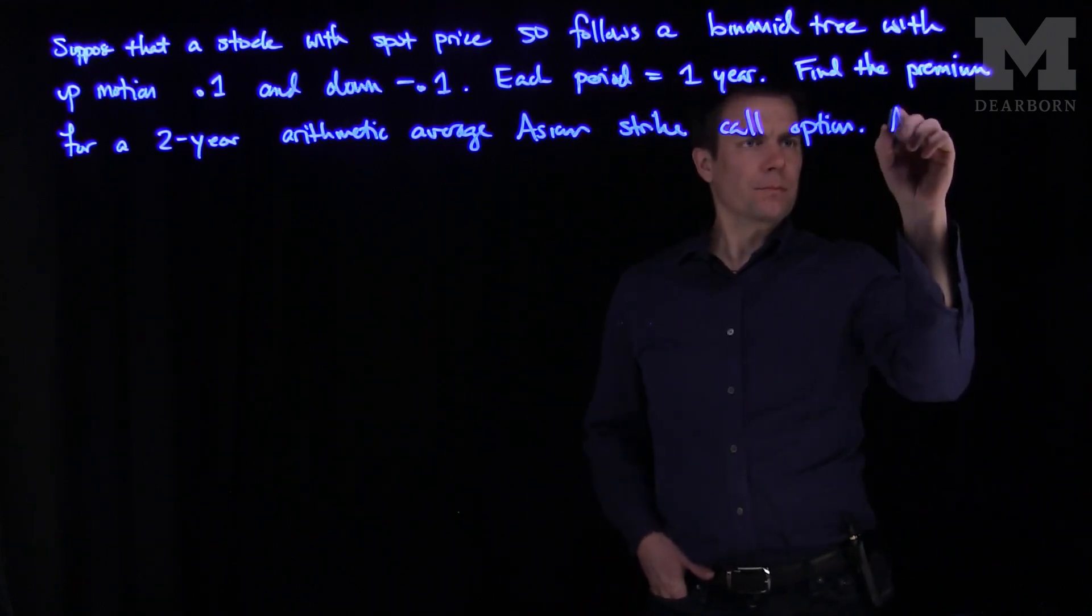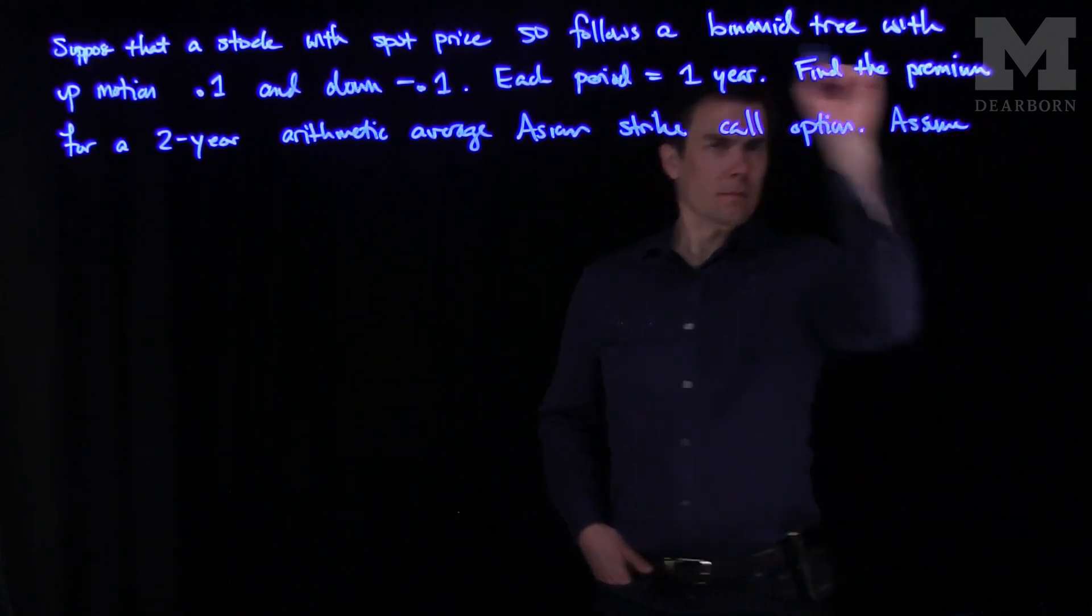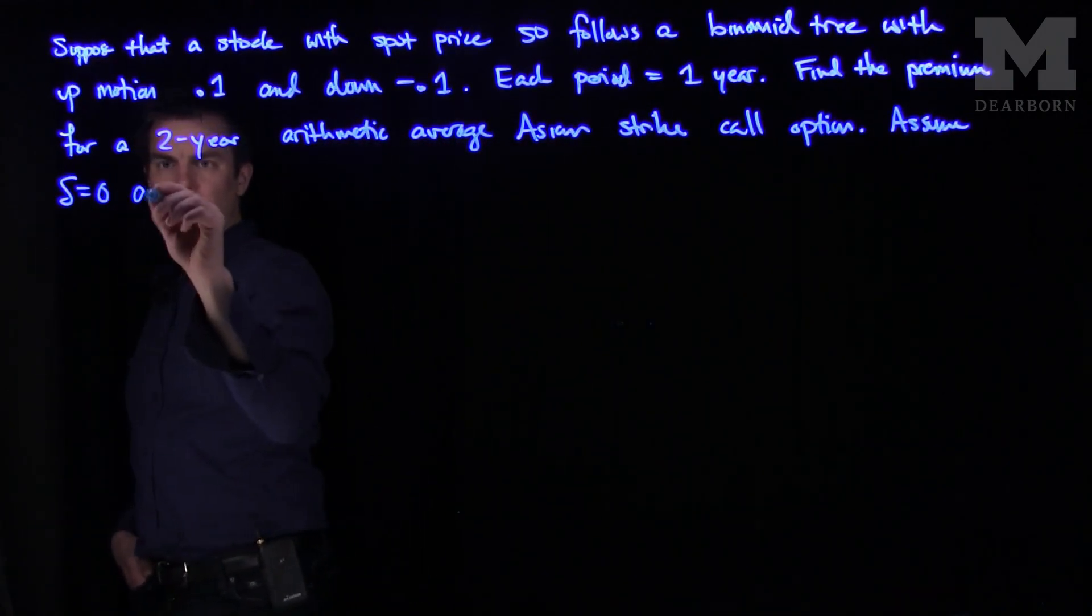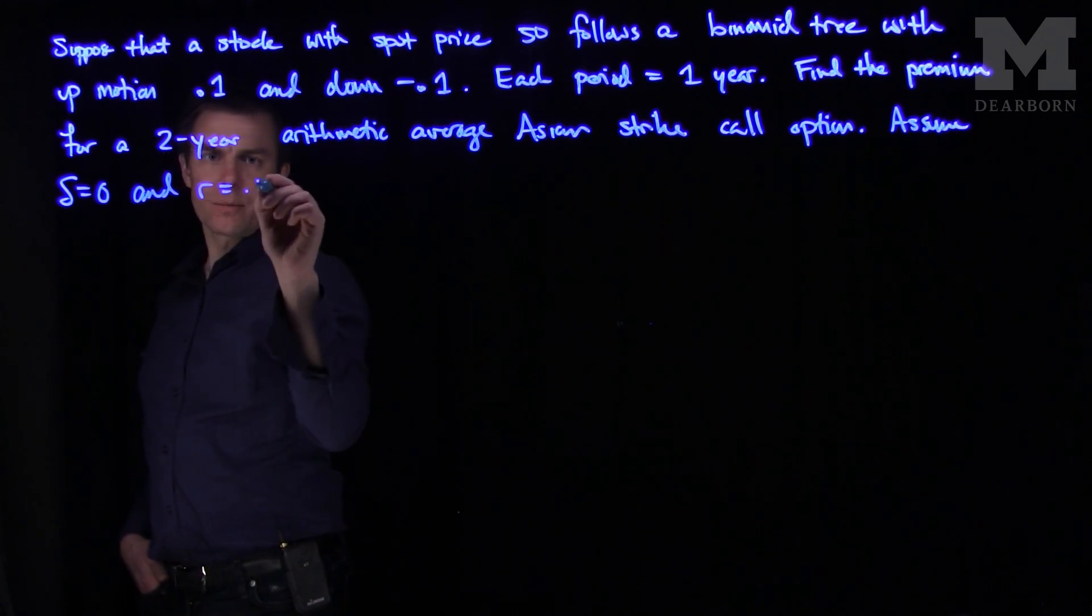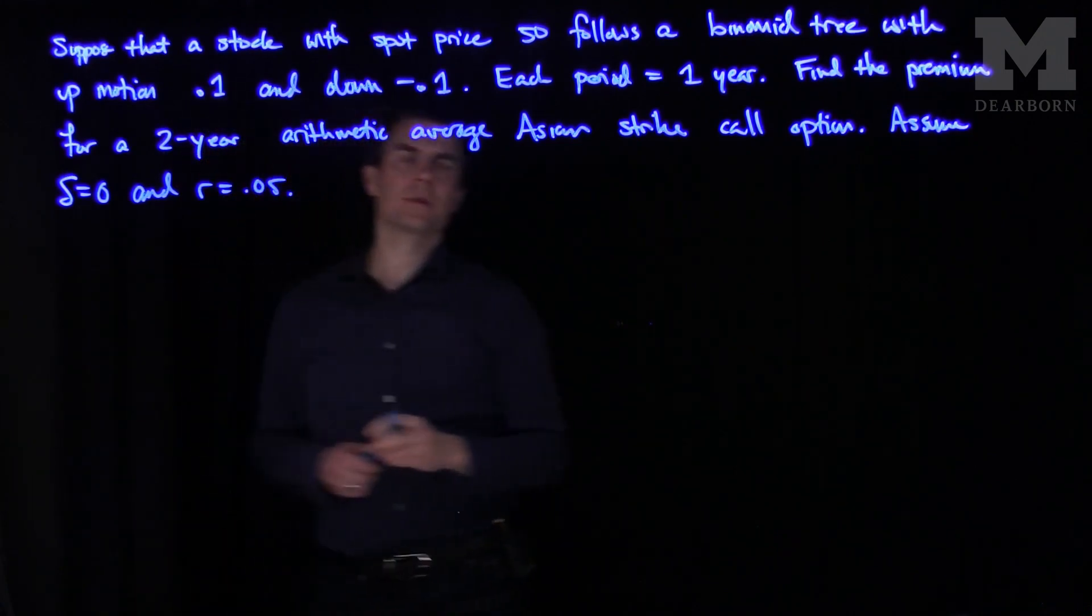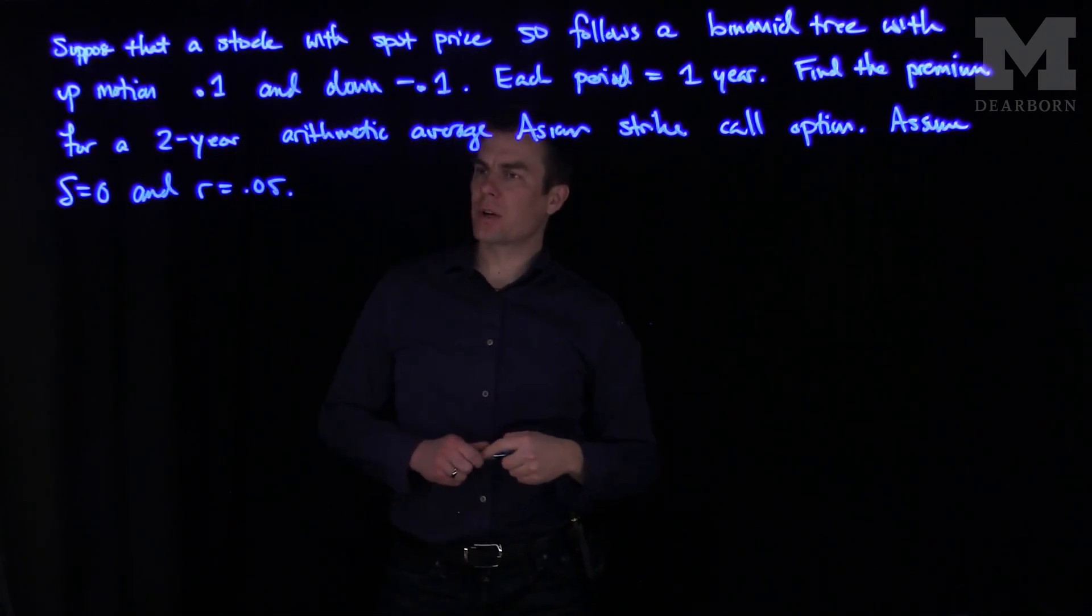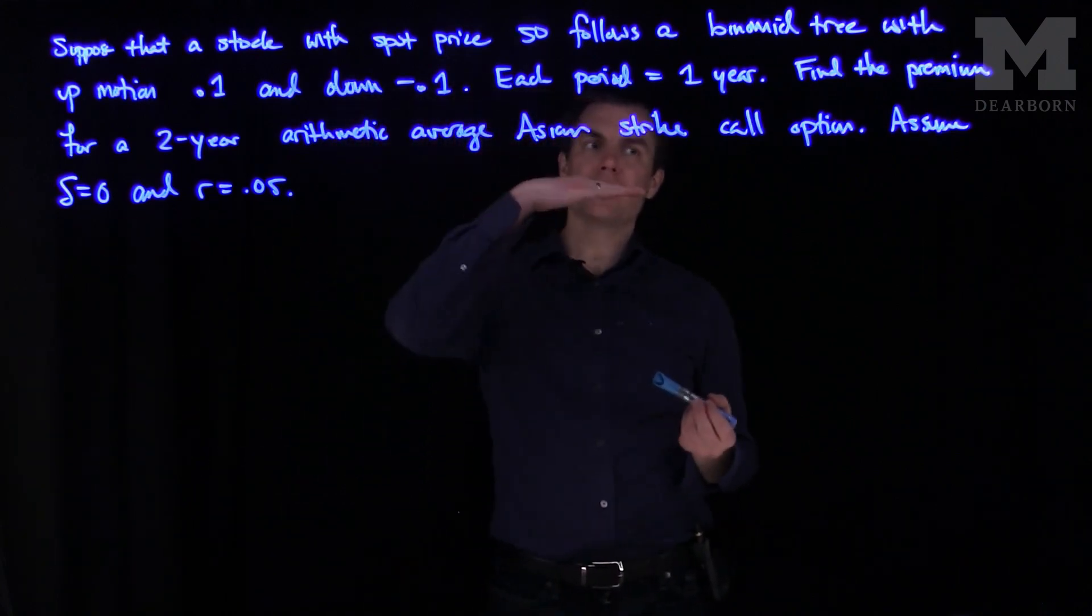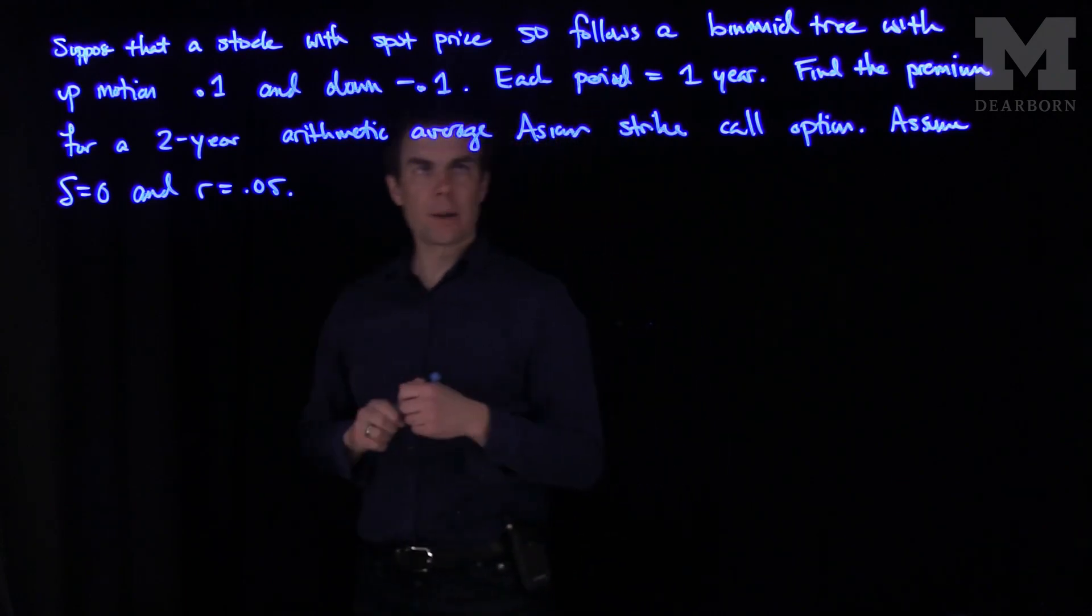And let's assume that this stock pays no dividends, that Delta is equal to zero and R is equal to 0.05. So the risk period of continuous return is 5%, there's no dividends. And let's find the Arithmetic Average Strike Asian Call Option.